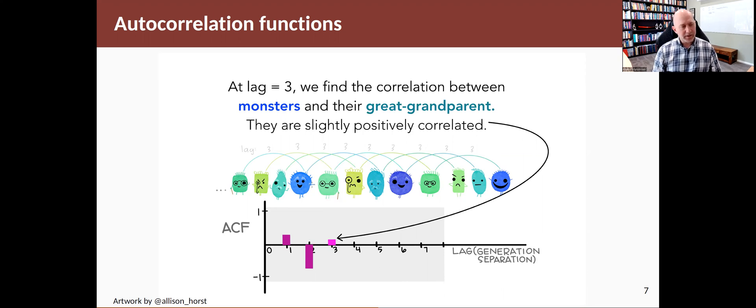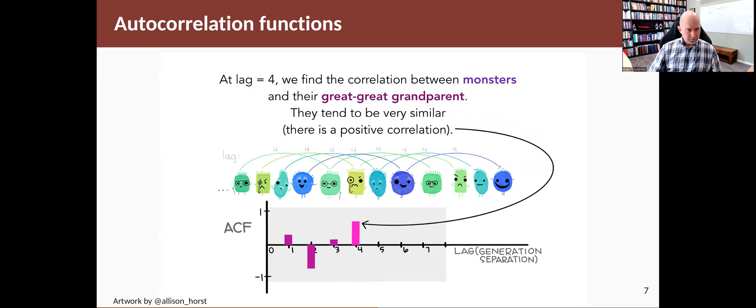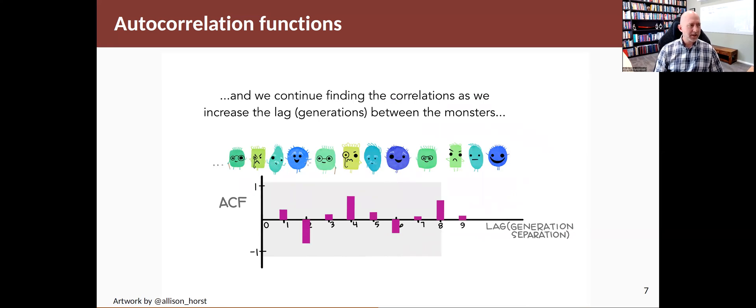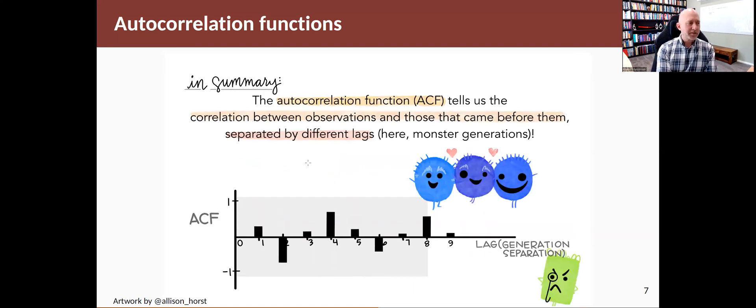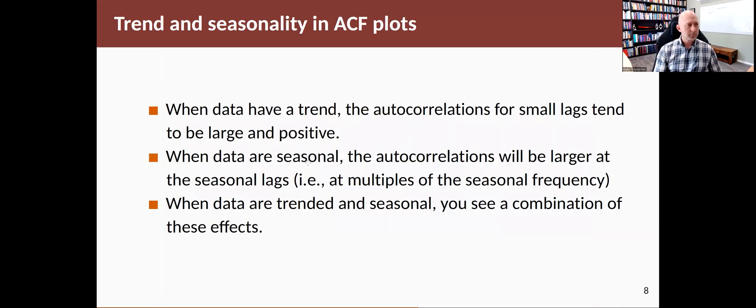And again, they're not very strongly related. And then at lag four, you're looking at someone and their great-great-grandparent, or this guy and his great-great-grandparent, and so on. And they're very strongly related to each other. So if you think about it in terms of generations of little monsters, then the correlation's telling you how similar generations are from each other. What's the gap you need to see the strongest relationships? And you put all this together, and you get the autocorrelation function. So in summary, the autocorrelation function tells you the correlation between observations and those that came before them, separated by different lags or different generations.